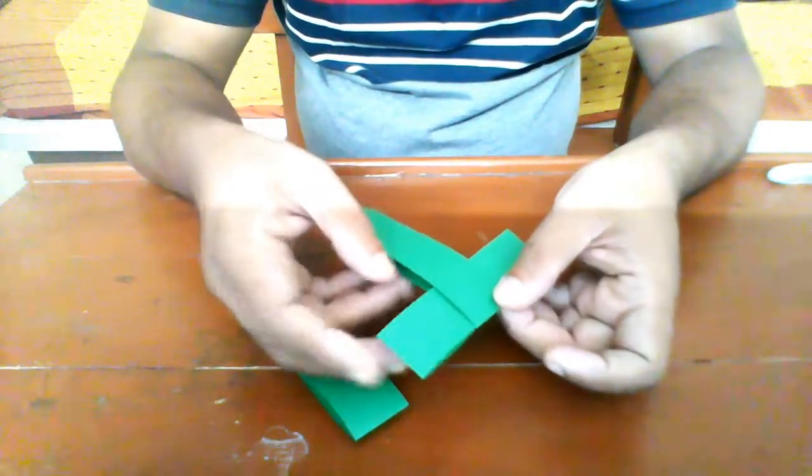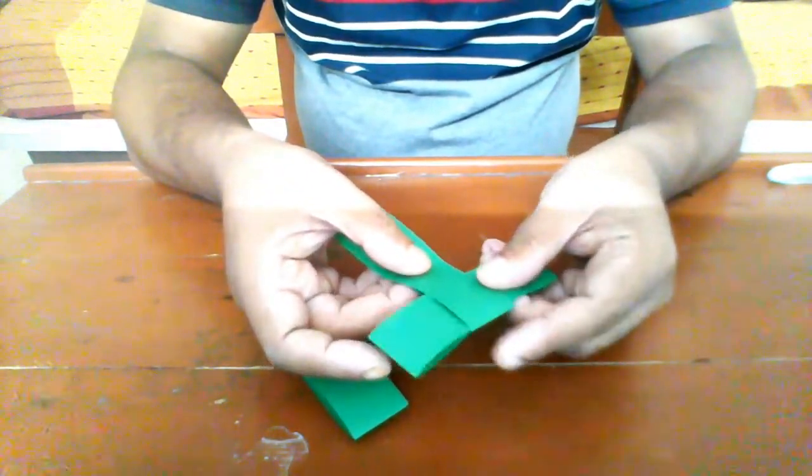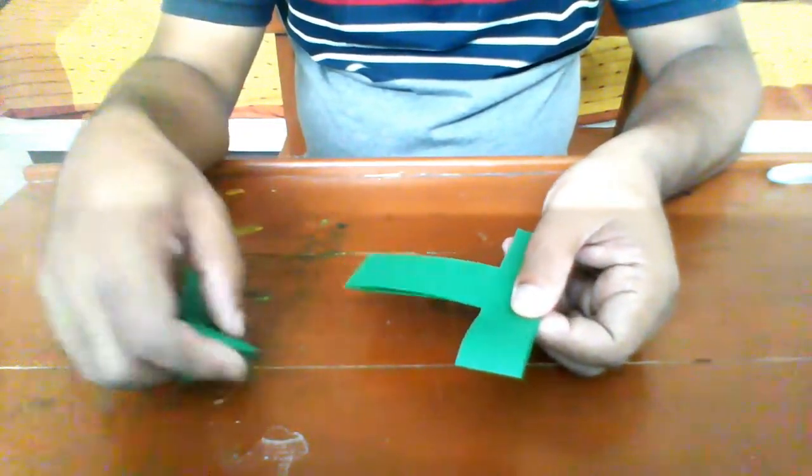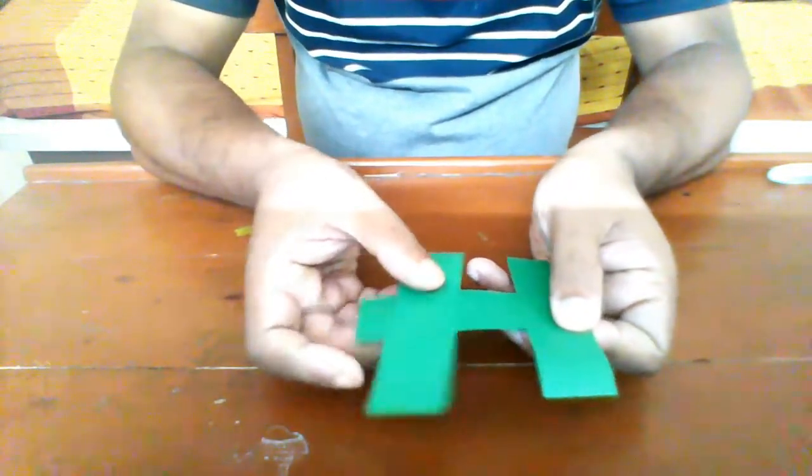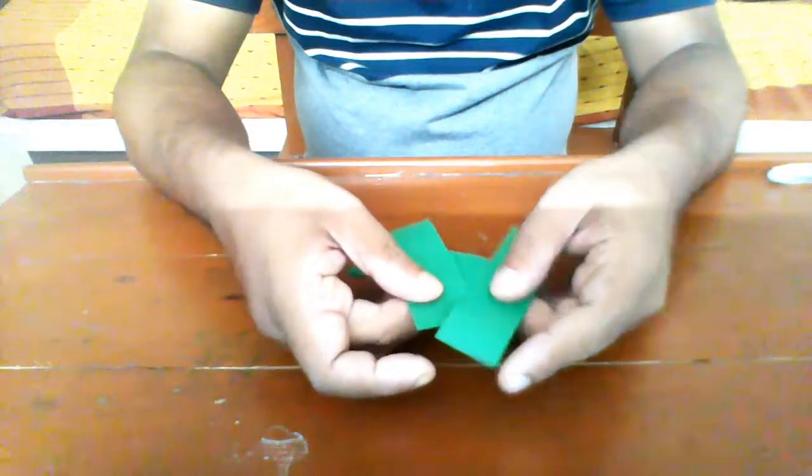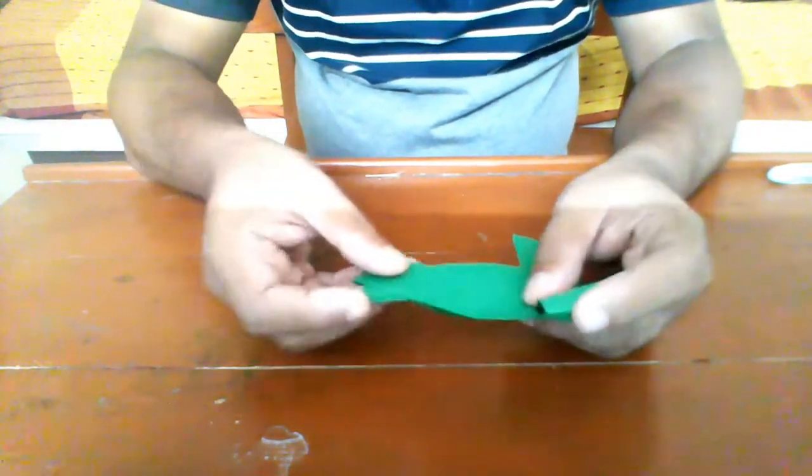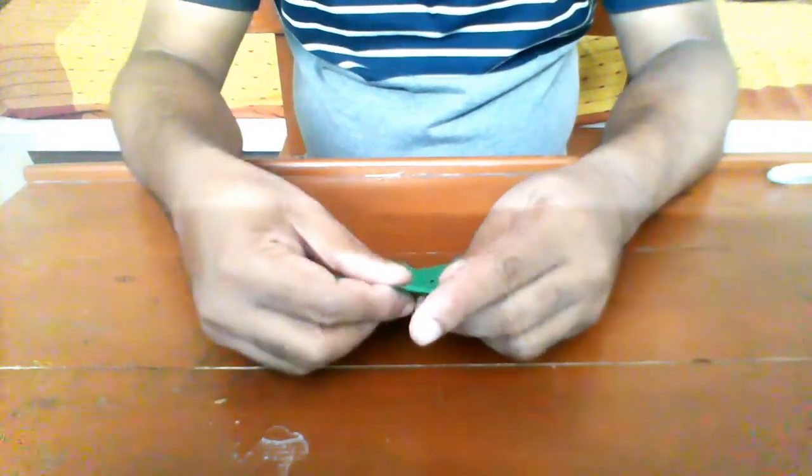And then hold the third piece so that it goes over the open piece and goes inside the closed loop. Take care in this step because it is a little tricky.